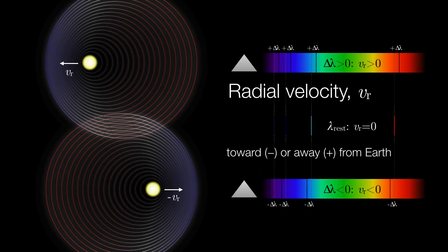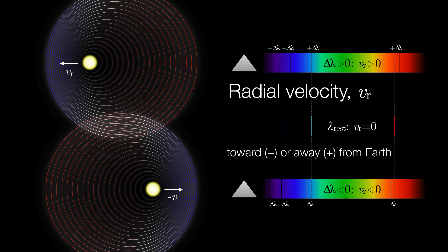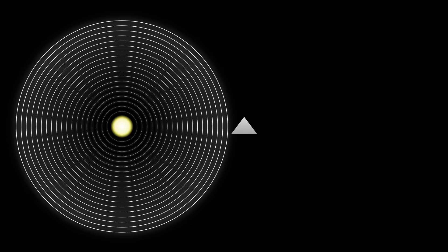So the velocity of a star's motion toward or away from us is called radial velocity, and we give that a negative value when it's approaching Earth and a positive value when it's moving away from Earth. This means that the greater the Doppler shift, the greater its radial velocity is going to be.